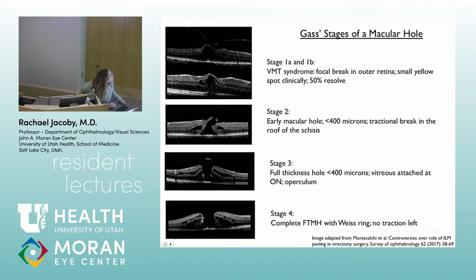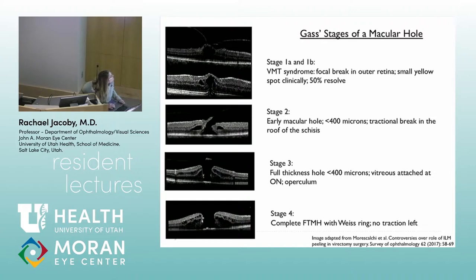In a stage 2 hole, the vitreous is still attached but we've essentially unroofed the schisis cavity — it's now a full thickness macular hole, typically less than 400 microns. We would recommend surgery for a stage 2 hole since only 2% resolve on their own. The hyaloid is still attached at this stage.